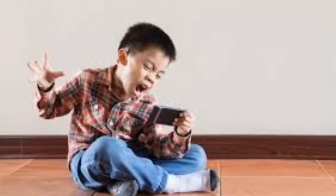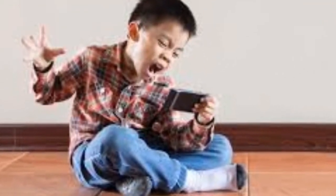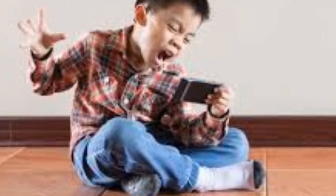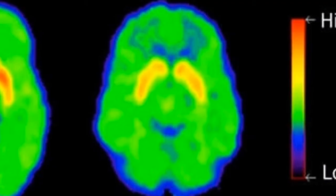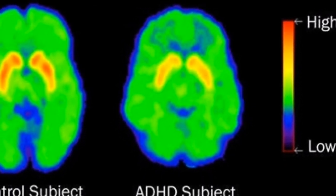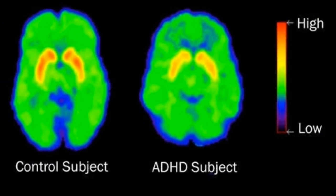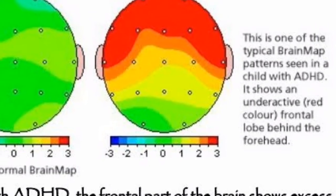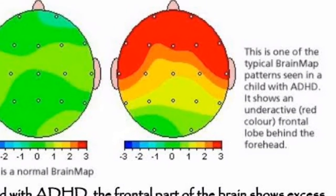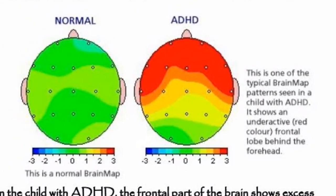In people with ADHD, brain scan studies have found abnormalities. MRI scanning cross-checking has shown reduced activity in the area associated with attention. Studies have found reduced neurotransmitter levels in people with ADHD. Special tests indicate the brain is not fully inactive in ADHD.